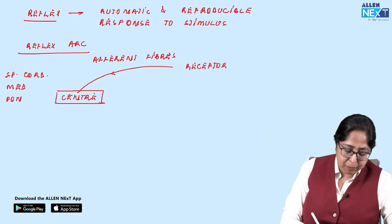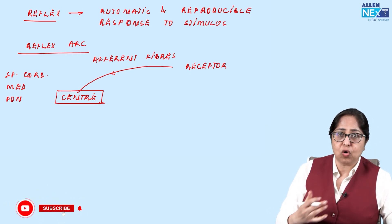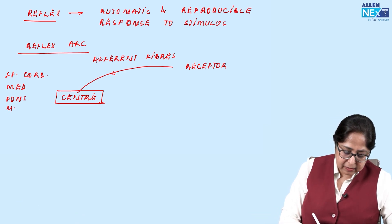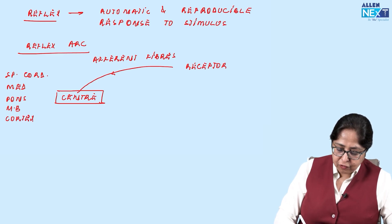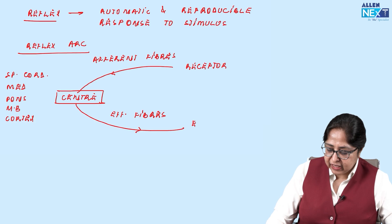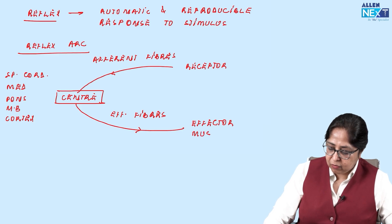The center could be the pons — pontine reflexes; if it's the midbrain — midbrain reflex; or the cortex — cortical reflexes. From the center arise the efferent fibers, which go to an effector. The effector could be a muscle or a gland.